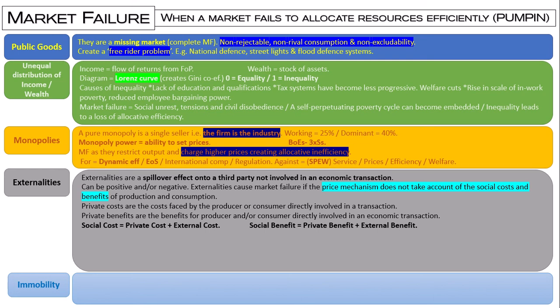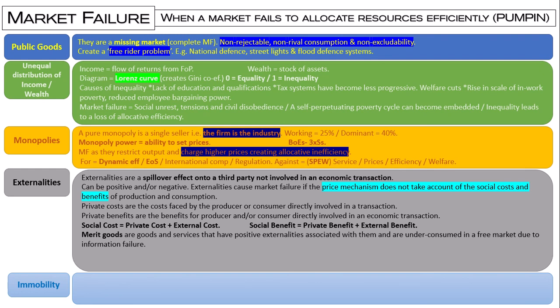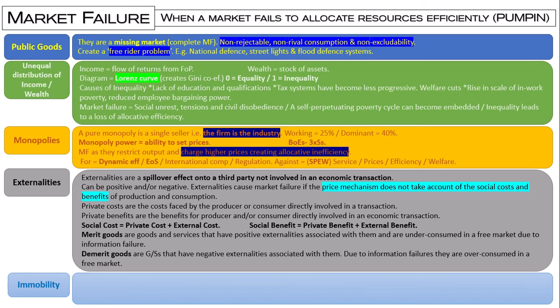Pause the video and define what is meant by a merit good. A merit good is a good or service that has positive externalities associated with it, and the key thing to remember is they are under-consumed in a free market due to information failure. Demerit goods are goods or services that have negative externalities associated with them, and due to information failures they are over-consumed in free markets. An example of a merit good would be education; an example of a demerit good would be alcohol.